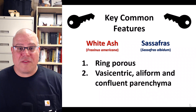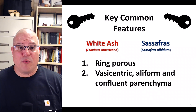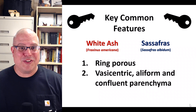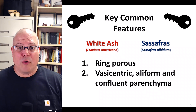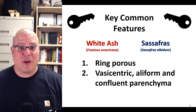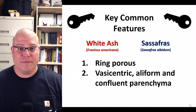We'll see many features of ash and sassafras today, but let's start by previewing the most important ones — the ones you should commit to memory. We'll start with the features these two woods share. Both are ring porous and can exhibit vasocentric, aliform, and confluent parenchyma.